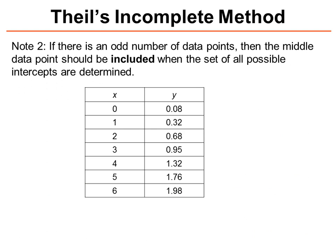Second point to note is, if there's an odd number of data points, when we come to work out all the possible intercepts, we do include the middle data point. So this is in contrast to when we're determining the gradients, when this middle data point is ignored. When it comes to working out all the different intercepts, we include this data point.